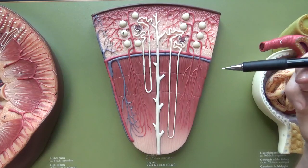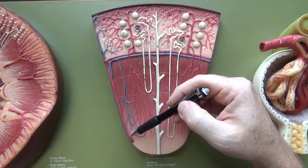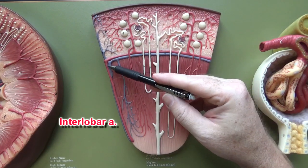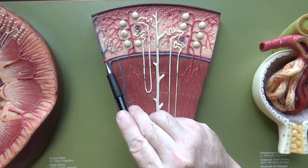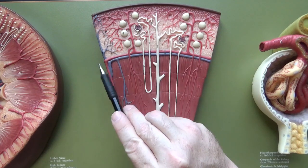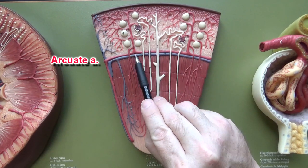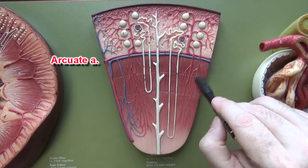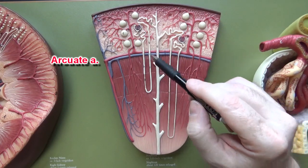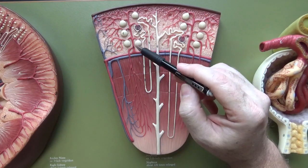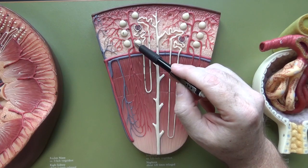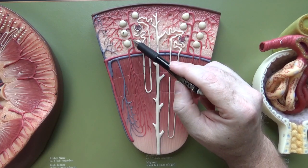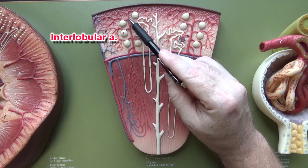Let's follow the blood vessels. This right here is an interlobar artery. The interlobar arteries will branch and form arcuate arteries. In this arcuate artery you can see it arcs around the back of the renal pyramid. This blood vessel that branches off the arcuate artery is an interlobular artery.